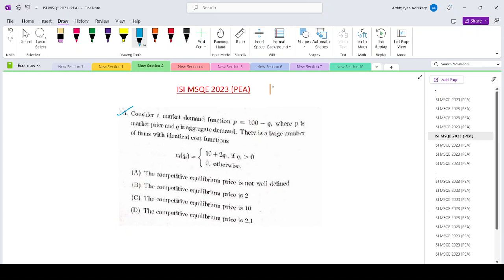Consider a market demand function p equals 100 minus q, where p is the market price and q is the aggregate demand.